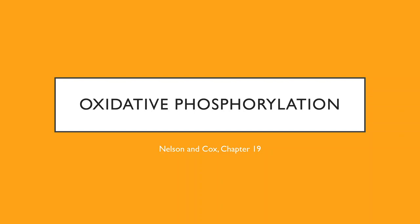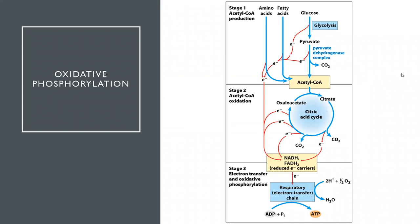Now we're ready to talk about oxidative phosphorylation. This is the last stage of cellular respiration that started with the production of acetyl-CoA from pyruvate, if we're starting from glucose. We talked about converting glucose to pyruvate through glycolysis, and then pyruvate is converted to acetyl-CoA by pyruvate dehydrogenase. Acetyl-CoA can also be made from amino acids and fatty acids through their separate catabolic processes. Then acetyl-CoA enters the citric acid cycle and eventually gets converted into carbon dioxide — so all the carbon from glucose or from whatever amino acids or fatty acids you started with gets converted into carbon dioxide.